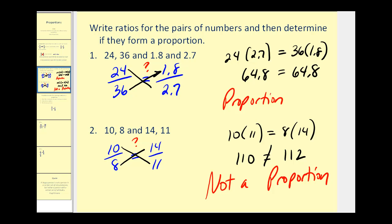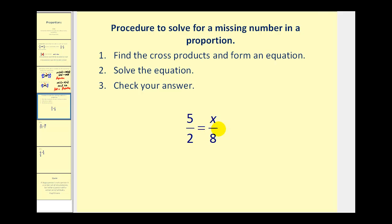Now we're going to talk about how we can solve a proportion if one of the four numbers is missing. And here's the procedure. We'll first find the cross products to form an equation, then we'll solve the equation, and then we'll check our answer.